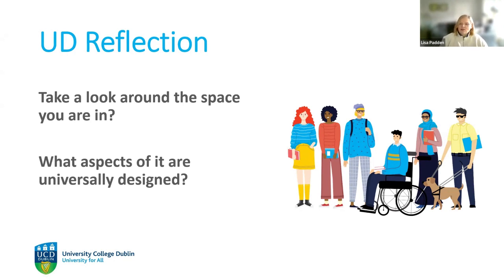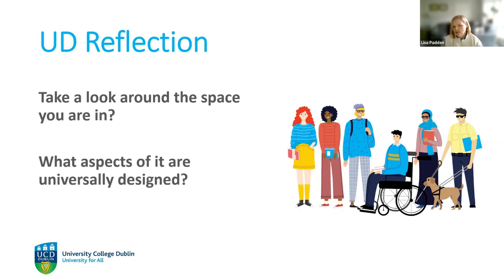For me, it's a new build house, so all the doors meet Part M building regulations, meaning someone using a wheelchair could access the building. The light switches are at an accessible height. In terms of aspects that aren't universally designed, the furniture is probably not universally usable, thinking about people of different heights, sizes and abilities. People could come in but wouldn't necessarily be able to use the space the way others would.